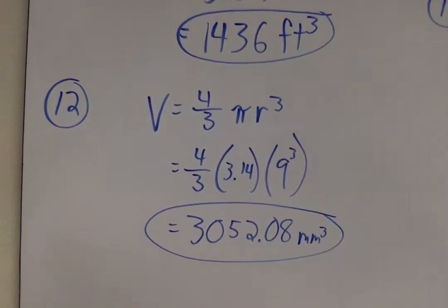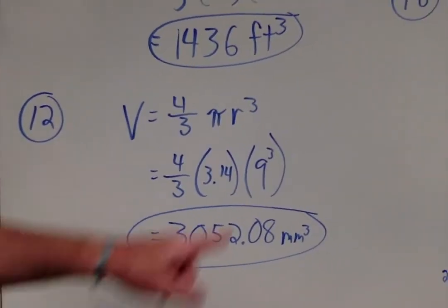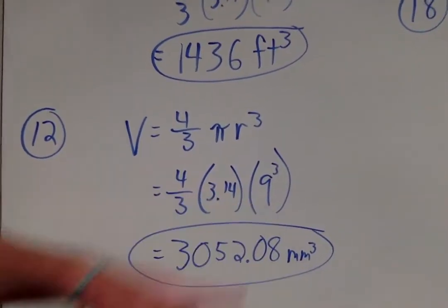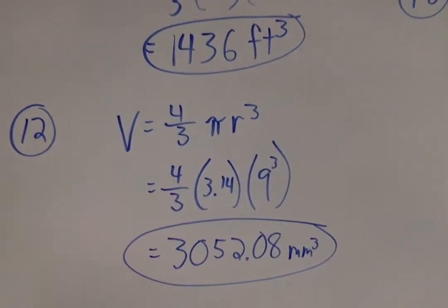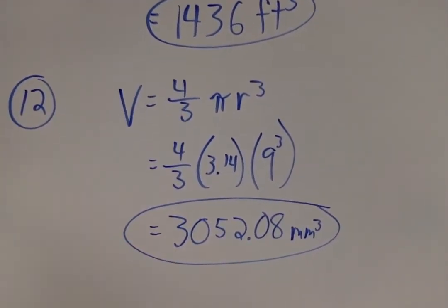If I remember right on number 12, they tried to trick you by giving you a diameter of 18! That means the radius is 9! 9 times 9 times 9 times pi times 4 divided by 3! And I got something close to 3,052.08 millimeters!